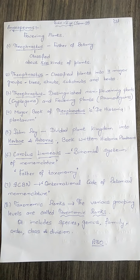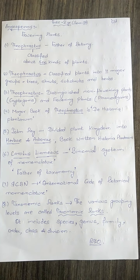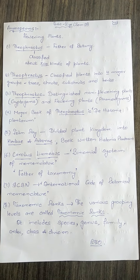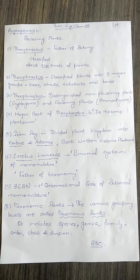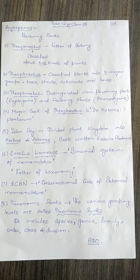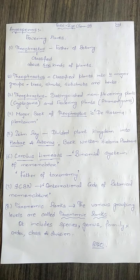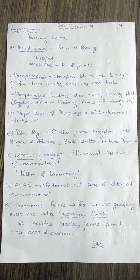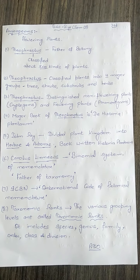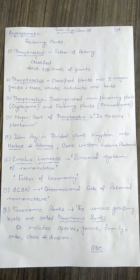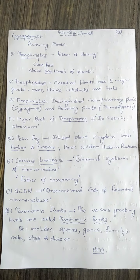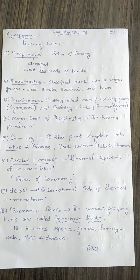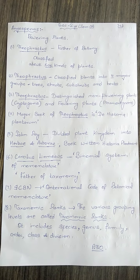Now, taxonomic ranks. How do you define taxonomic ranks? They are the various grouping levels, such as species, genus, family, order, class, and division.